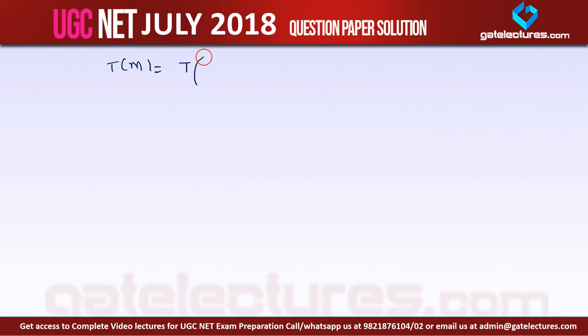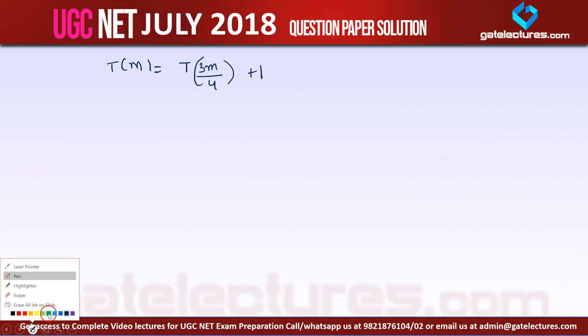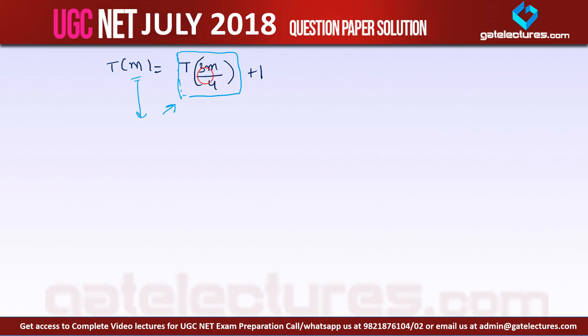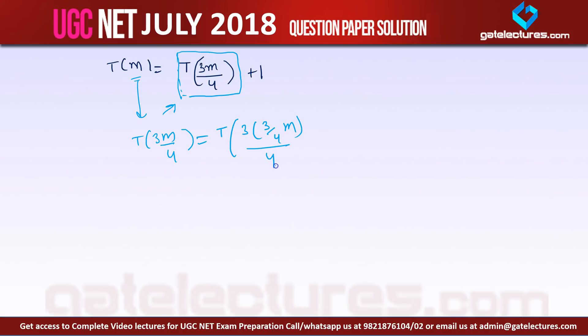The recurrence relation given is T(m) = T(3m/4) + 1. To apply back substitution, wherever we have m, substitute 3m/4. So T(3m/4) = T((3/4)·(3m/4)) + 1 = T(3²m/4²) + 1.